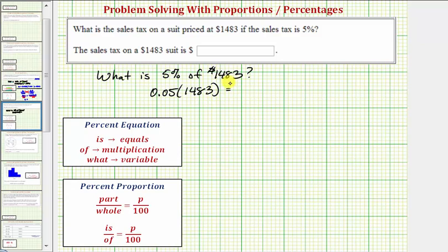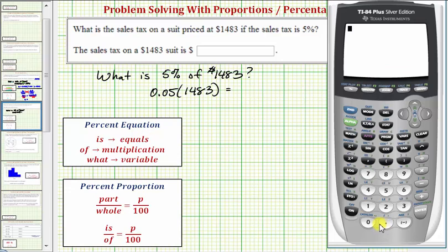Let's go ahead and do this and then we'll also set this up more formally using the percent equation and the percent proportion. 0.05 or just .05 times 1,483 is equal to 74.15, which means the sales tax is $74.15.